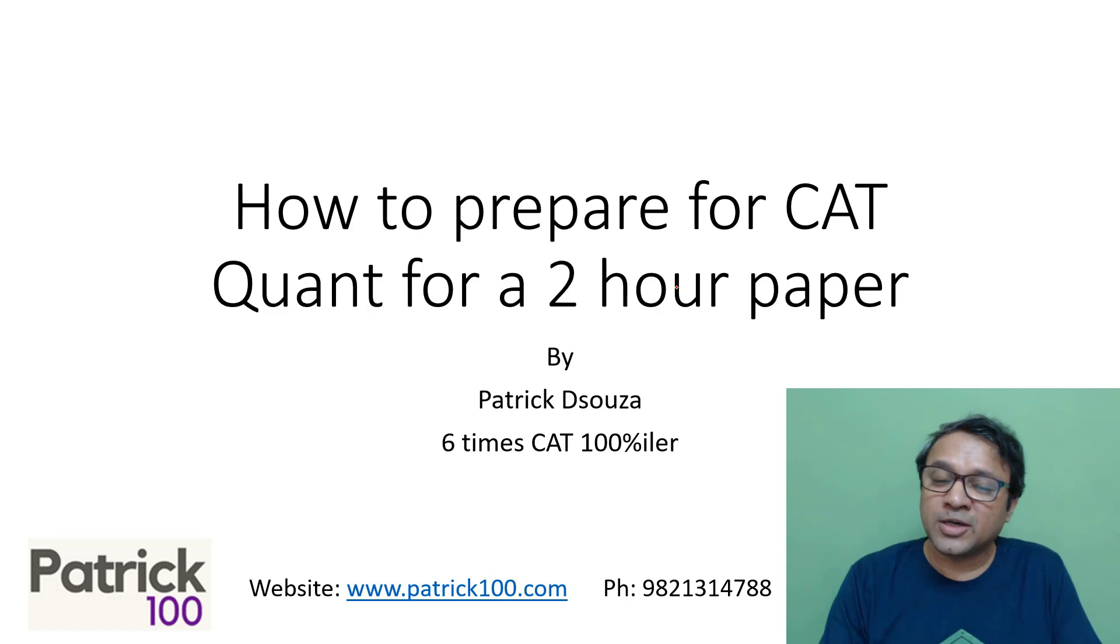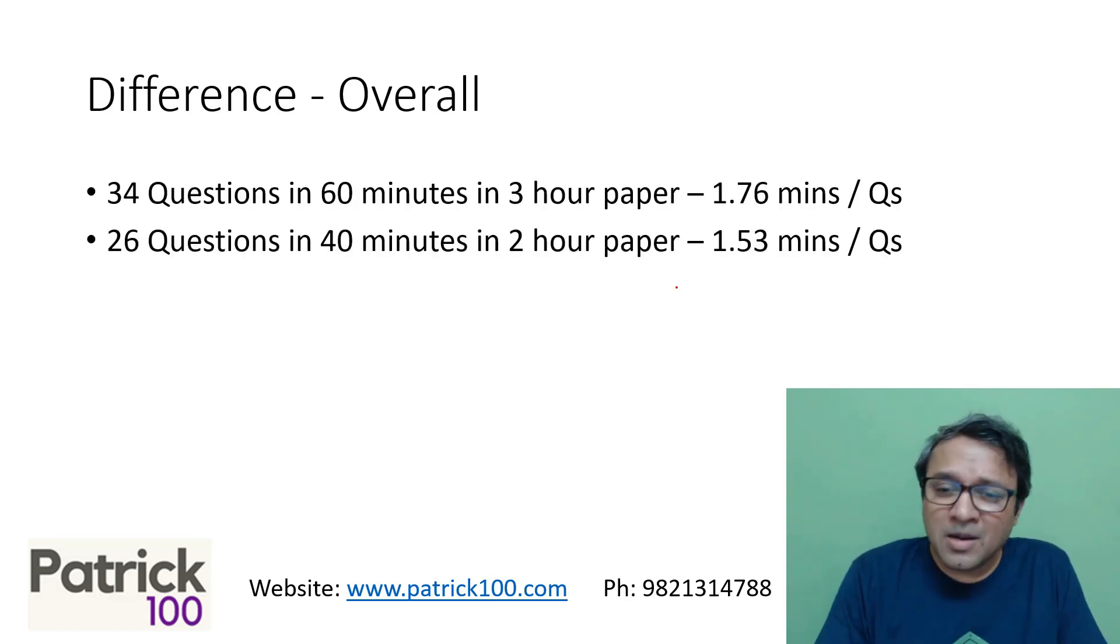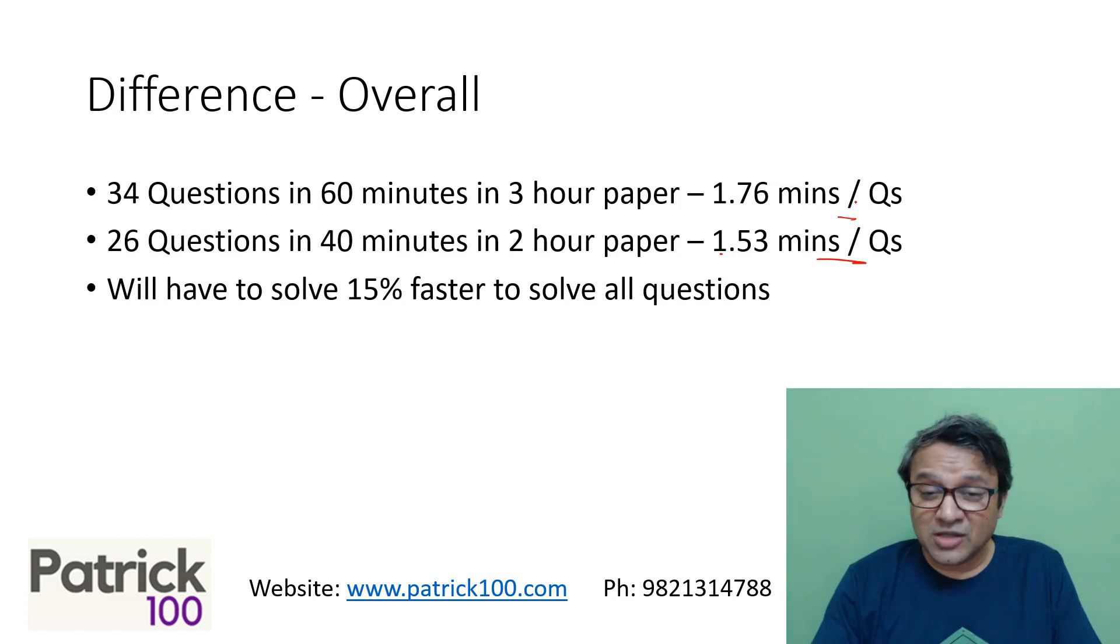The difference is, if you look at per minute, the number of questions in a 2-hour paper is more than in a 3-hour paper. Therefore, the time that you get in a 2-hour paper for every question is much less - about 15 percent faster to solve all the questions technically.